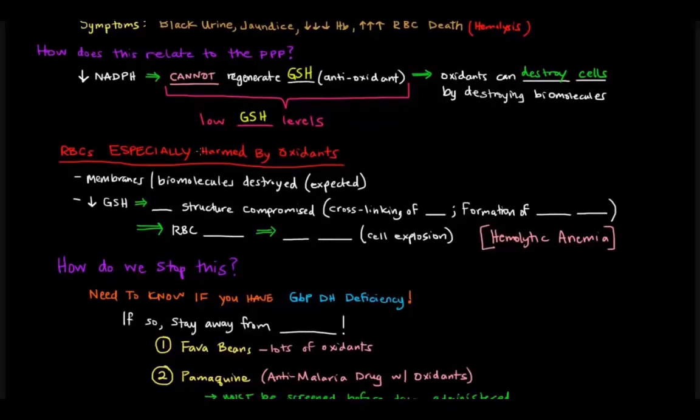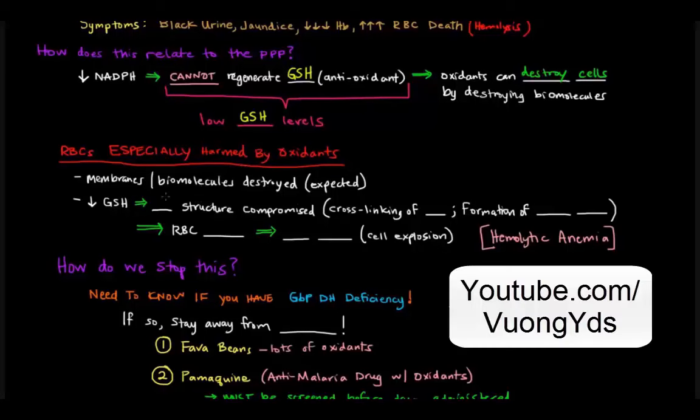They're especially harmed by these oxidants. And the obvious thing is that the membranes and the biomolecules are destroyed, which is something that we'd expect because if there's low GSH around, we can't fight off those oxidants.